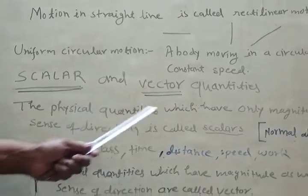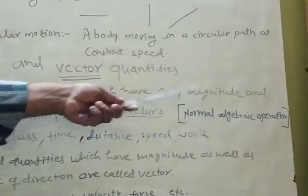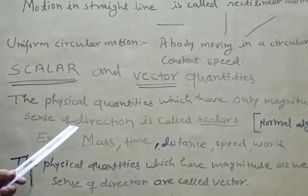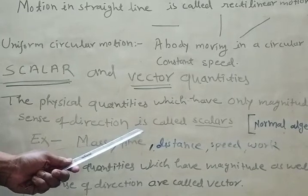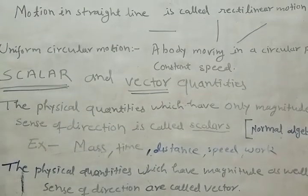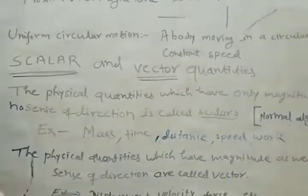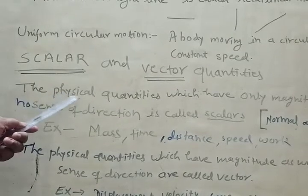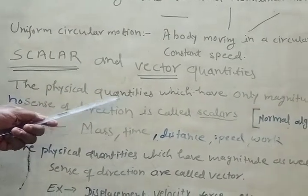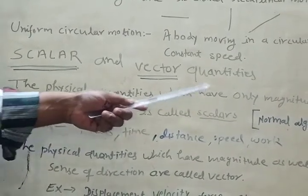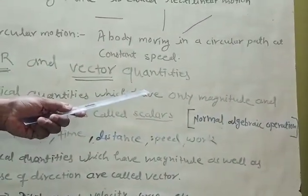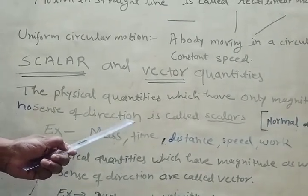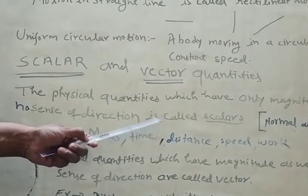Scalar and vector quantity. We define what is scalar quantity. The physical quantity which have only magnitude and no sense of direction is called scalar quantity. Physical quantities which have only magnitude and no sense of direction.